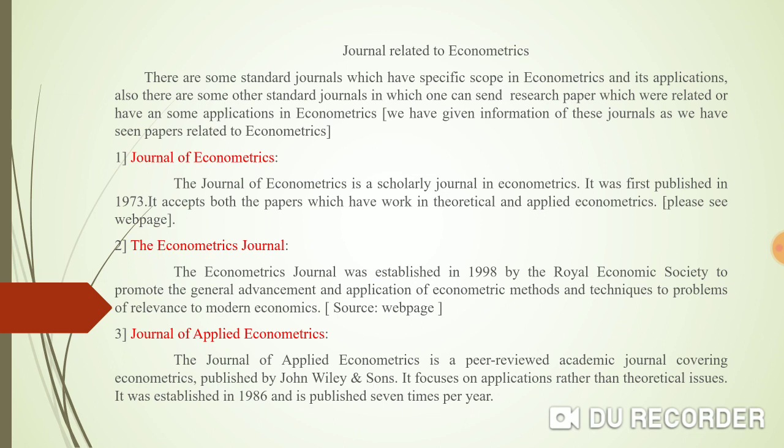Let's look at some journals related to econometrics, where you can find the most recent studies in the field. The first is the Journal of Econometrics, a scholarly journal dedicated specifically to econometrics, first published in 1973. It accepts papers in both theoretical econometrics and applied econometrics. You should refer to its web page for more details.